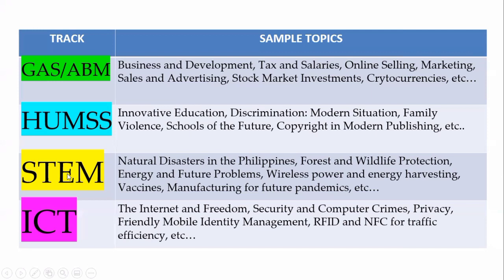For STEM students, topics can be related to biology, engineering, and mathematics — possibly related to medicine, natural disasters in the Philippines, forest and wildlife protection (especially given the trend of plant-keeping during the pandemic), endangered plants taken from forests, wireless power and energy harvesting, solar panels, and manufacturing for future pandemics, among others. These are just to give you possible topics and ideas for writing a research title.